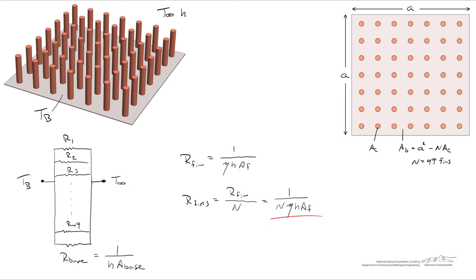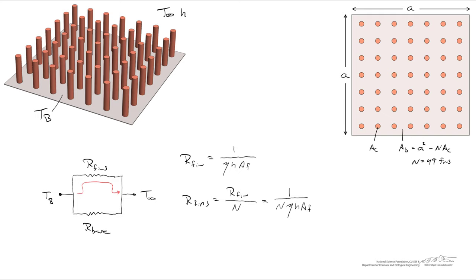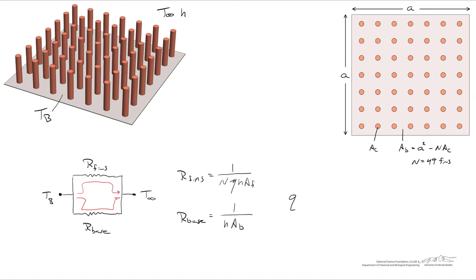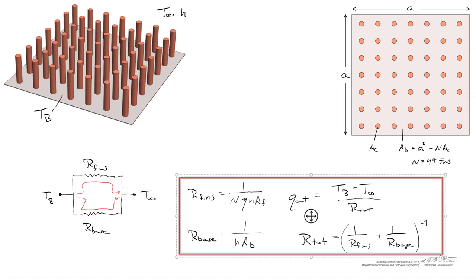This is what our simplified thermal circuit looks like — heat flows either through the fins or through the base. Our total rate of heat transfer Q_out equals the driving force (T_base minus T_infinity) divided by the total resistance, where total resistance is defined as two resistors in parallel: one over R_fins plus one over R_base, and then the reciprocal of that sum. When combined, these equations form a fairly convenient way to calculate the total rate of heat transfer from a fin array.